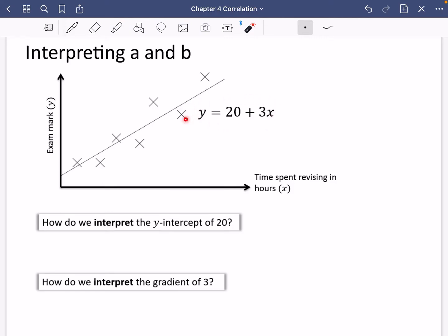So they will give you the regression line in the question. You won't have to calculate that yourself. But what you will need to do is interpret the values of a and b, of this part and of this part here. And interpret, remember what that means? It means explaining something in the context of the question.